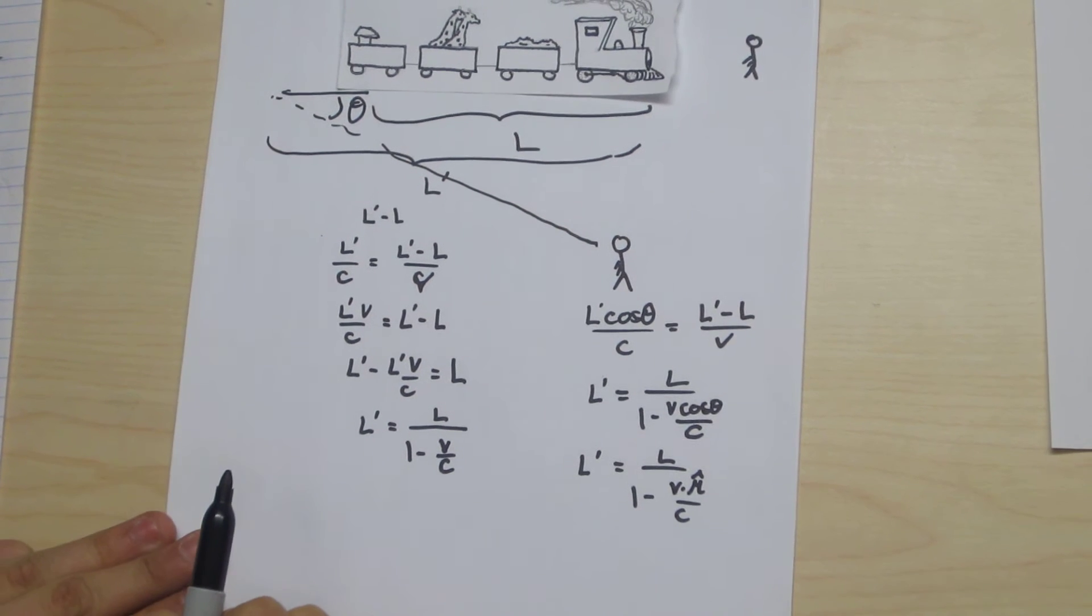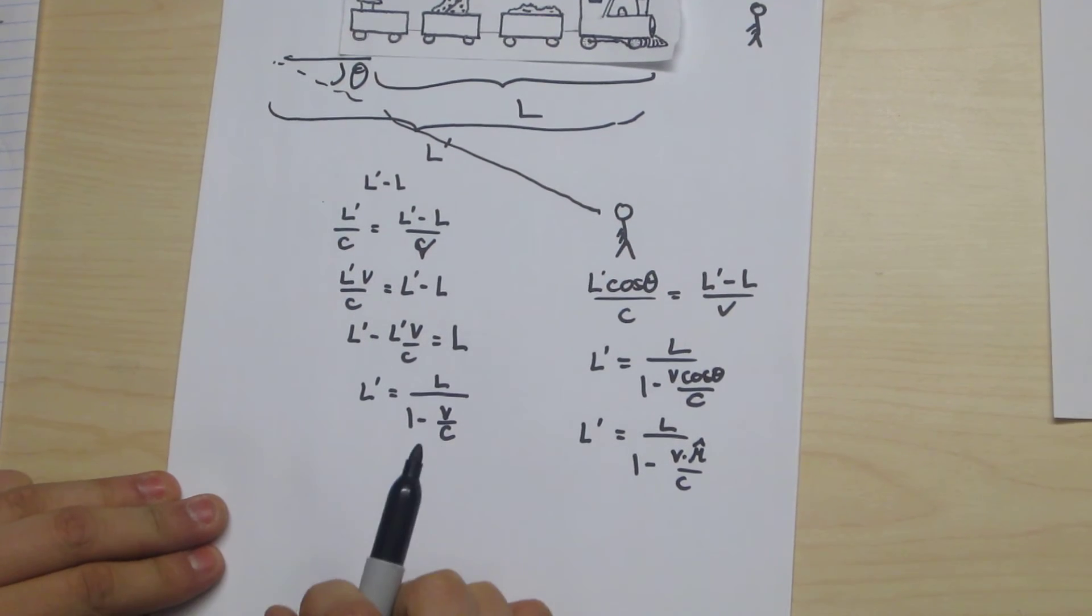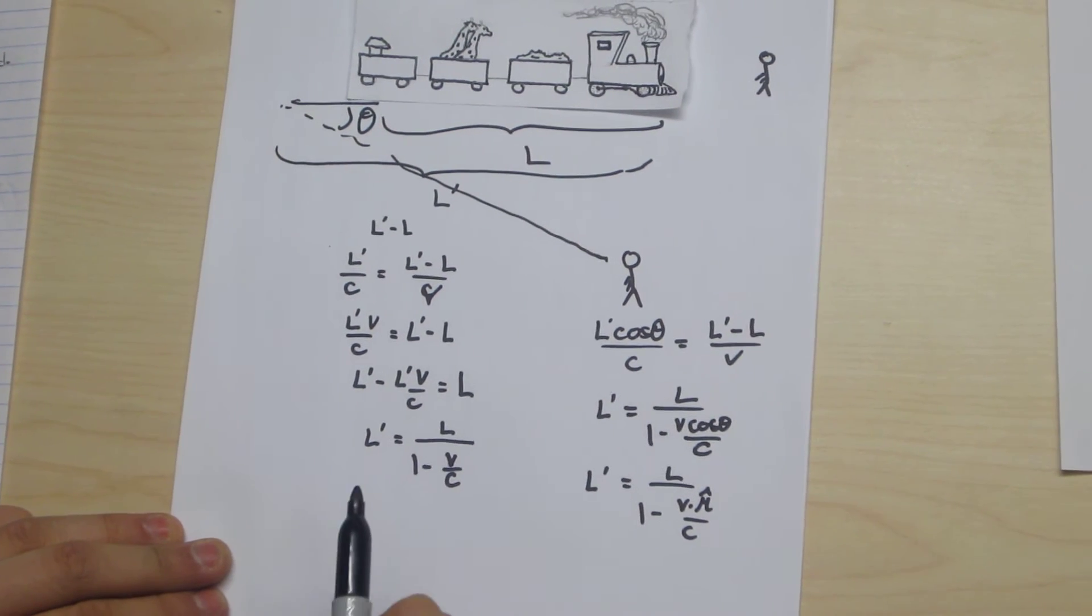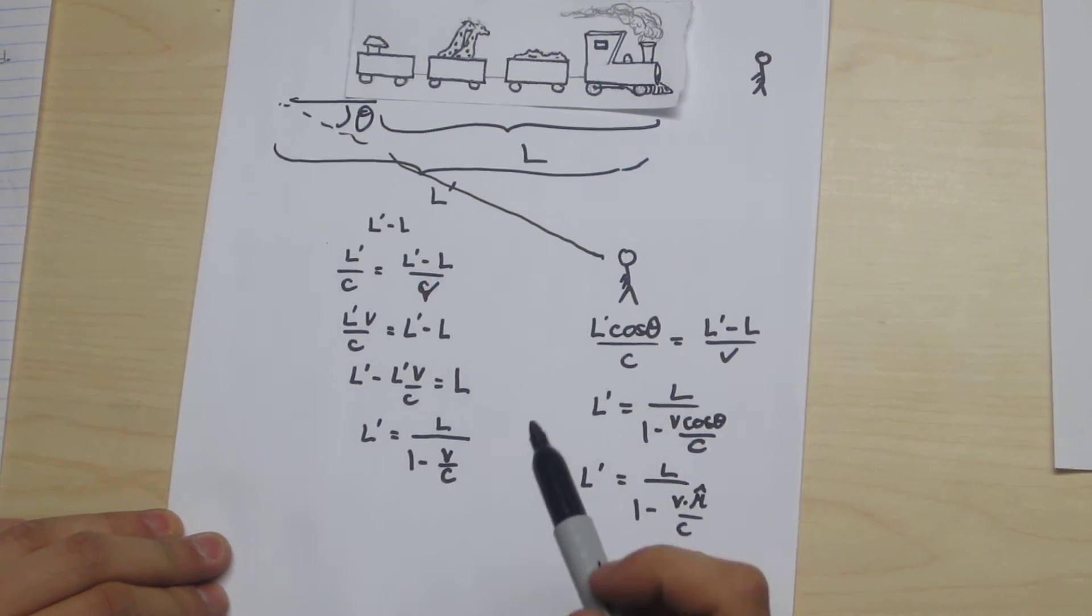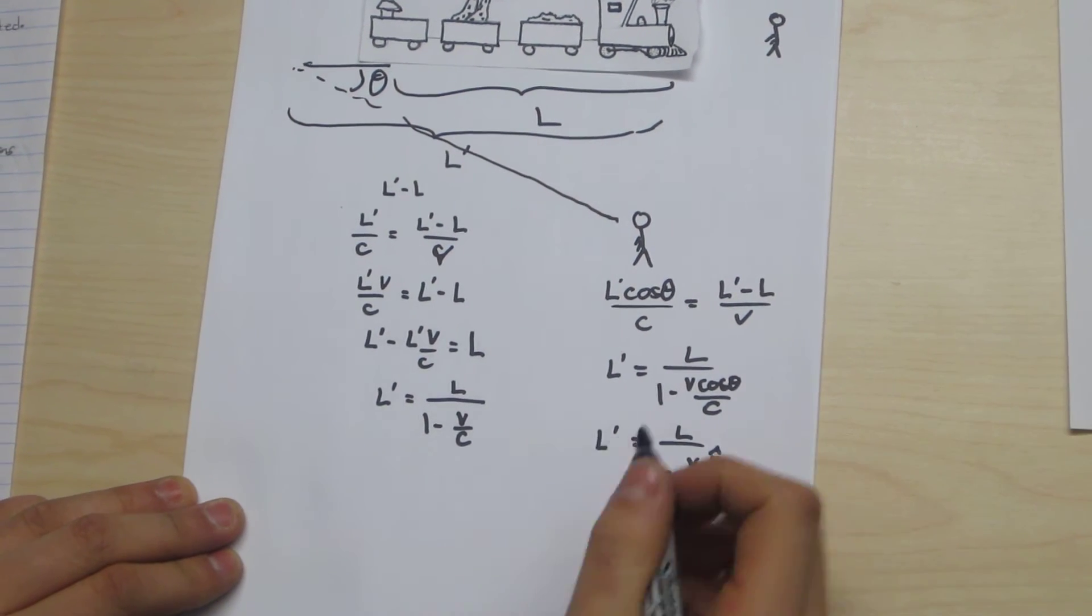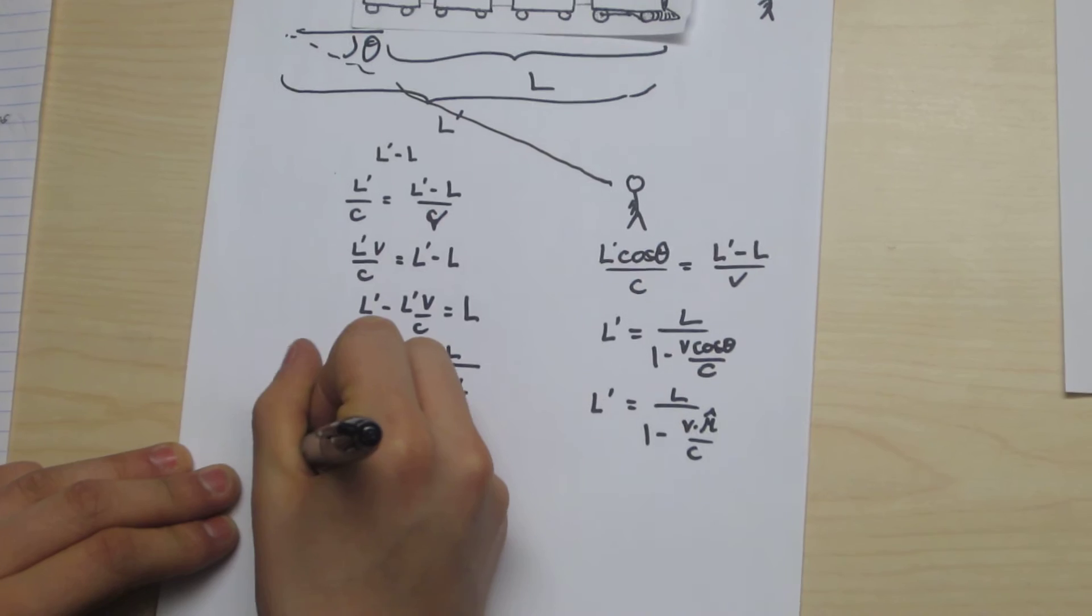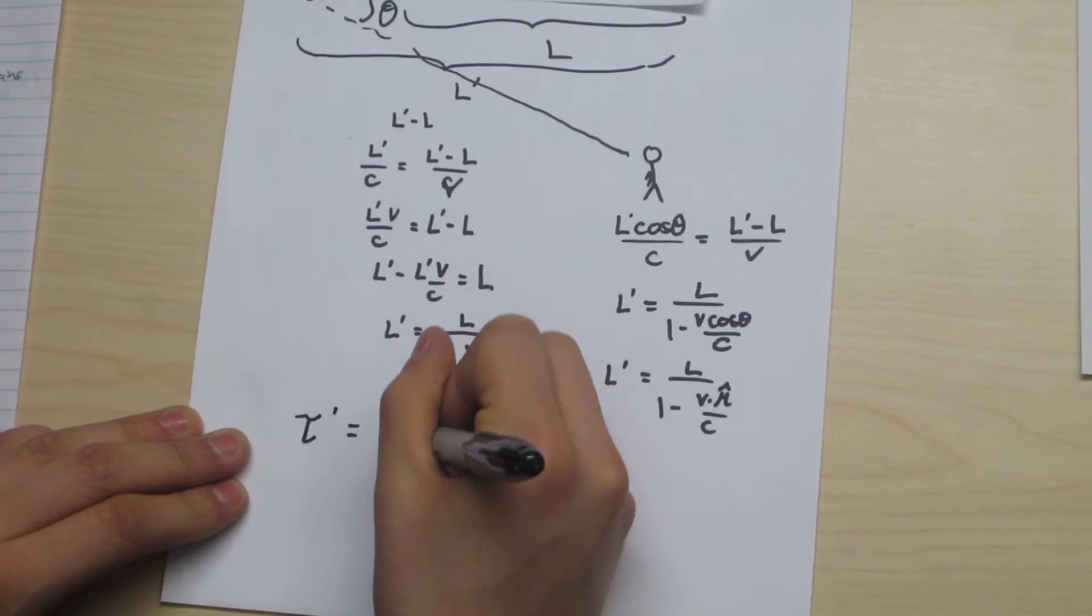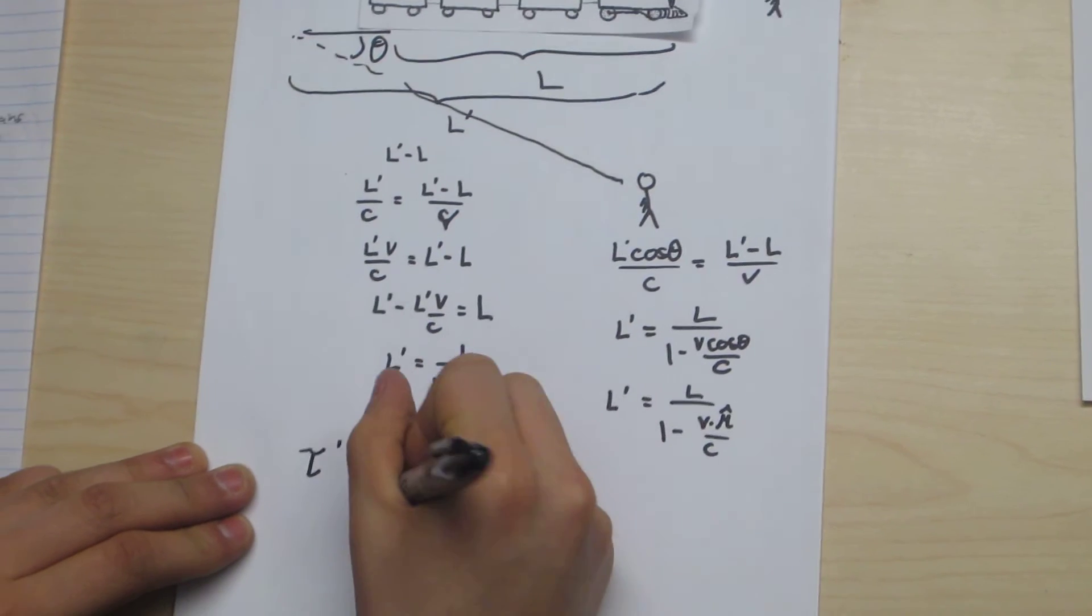Now this change in apparent size is only valid for the length dimension in which the train is moving. As a result, the height and width of the train appear undistorted to both our observers. And the apparent volume change of the train is the same as the apparent change of length.